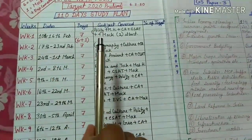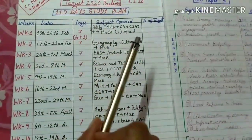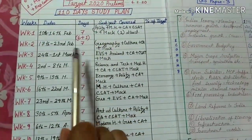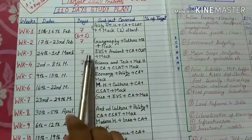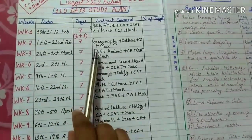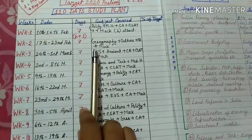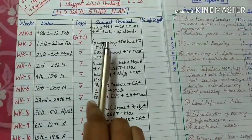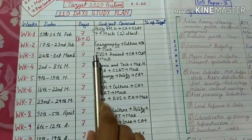I personally recommend you to give at least two mocks every Sunday. If possible, give at least three mocks — two for GS and one for CSAT. As I am from an arts background, I feel that CSAT is quite difficult for me, so I will give one CSAT mock every Sunday. But if you feel you are good enough in CSAT, you can utilize this time for GS mocks.